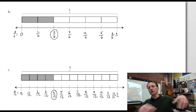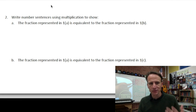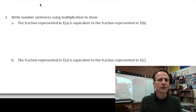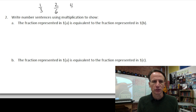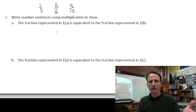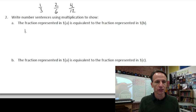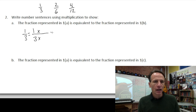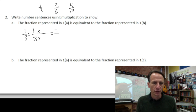Let's go on to number two, which actually asks about number one. So take a little snapshot here. Number two asks us to refer back to number one. In 1A, the fraction was one-third. In 1B, it was two-sixths. And in 1C, it was four-twelfths. We're asked to write number sentences using multiplication to show that the fraction in A, one-third, is equivalent to the fraction in B, two-sixths. We're going to just fly through this — set up the multiplication and prove that one-third equals two-sixths.